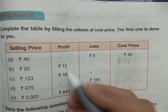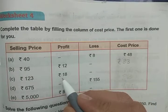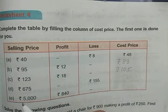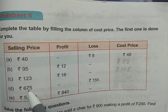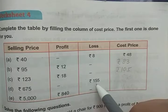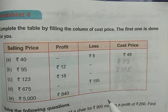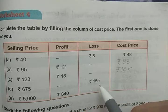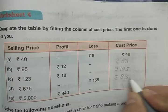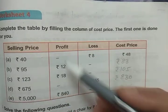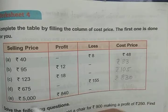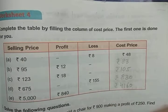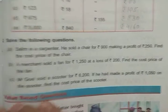Next, selling price is rupees 123 and profit is given, so we subtract: 123 minus 18 equals rupees 105. Next, selling price is rupees 675 and loss is given, so we add: 675 plus 155 equals rupees 830. The last one: selling price and profit are given, so we subtract: 5000 minus 840 equals rupees 4160.